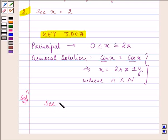The value of sec x is given to us as 2. So that means 1 upon cos x is equal to 2.